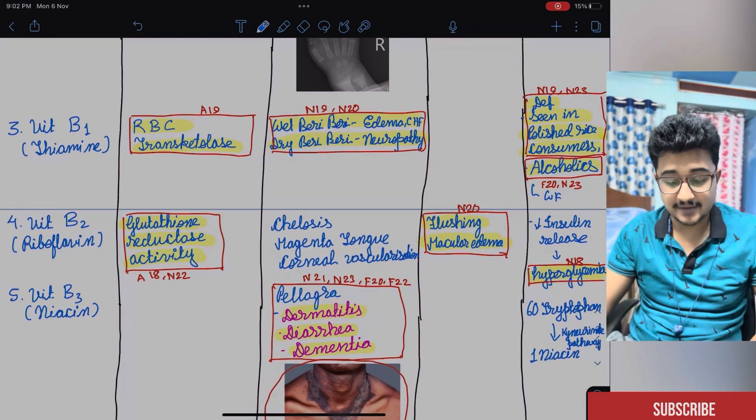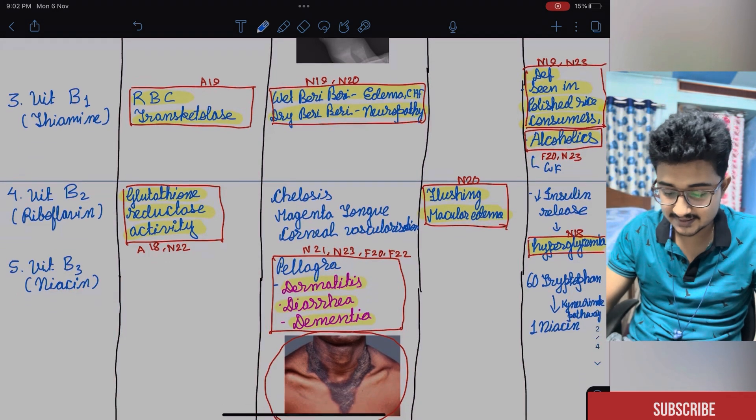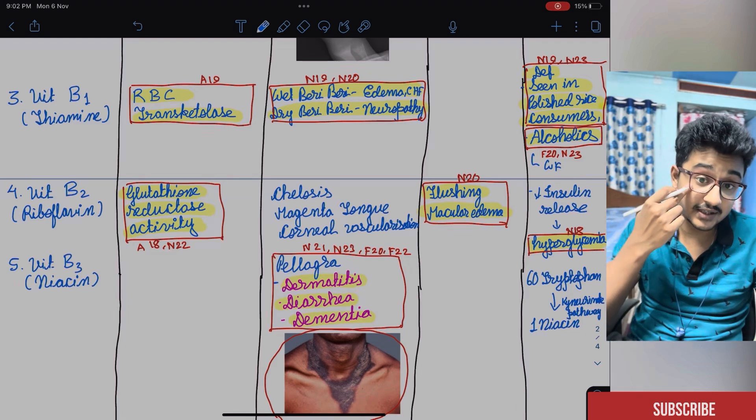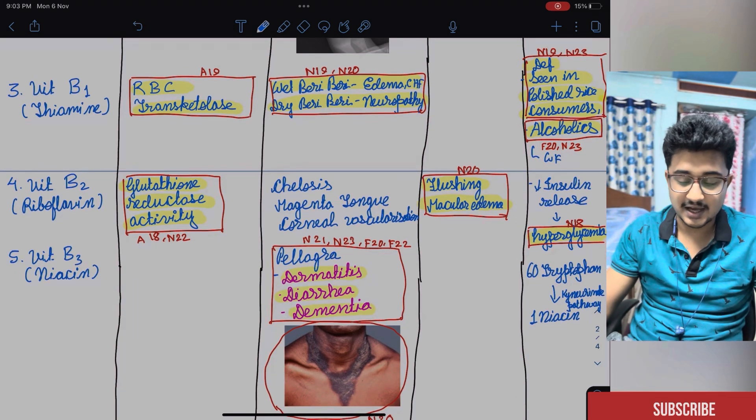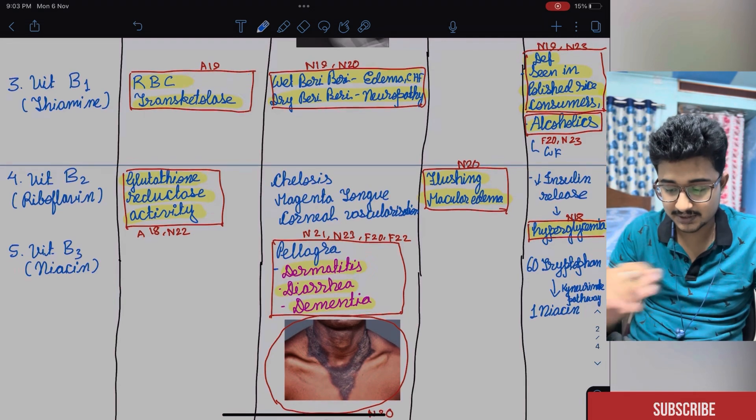Vitamin B2, riboflavin, glutathione reductase activity. It is important. It has come in AIMS and NIT. And it causes cheilosis, magenta color tongue and corneal vascularization. I have not shown the image because it has not come till now but it can come. It is a prospect MCQ.